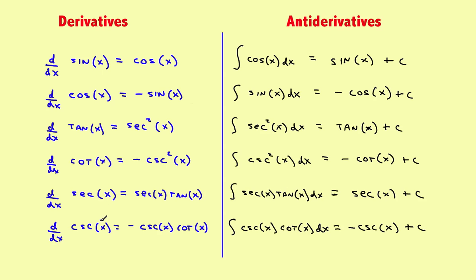You had the derivatives of the six trig functions: sine, cosine, tangent, cotangent, secant, and cosecant, and they turned out to be these values. When we found the anti-derivatives, we just found the anti-derivatives of whatever was on the right-hand side. So if the derivative of sine was cosine, then the integral of cosine turned into sine, and so on.